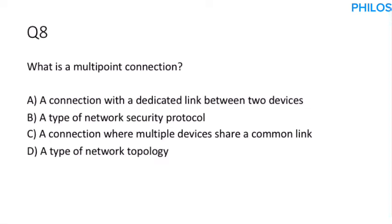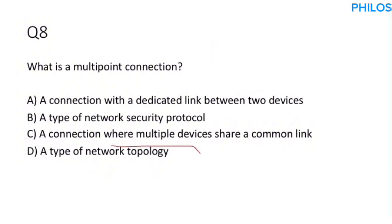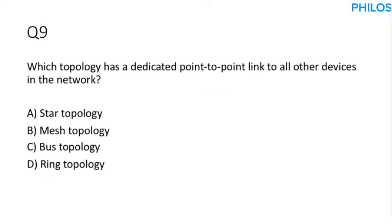Question eight: What is a multi-point connection? A multi-point connection is a connection where multiple devices share a common link. Multiple devices share a common link — that is a multi-point connection.